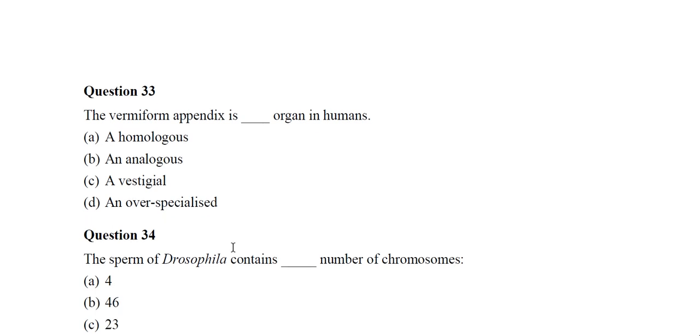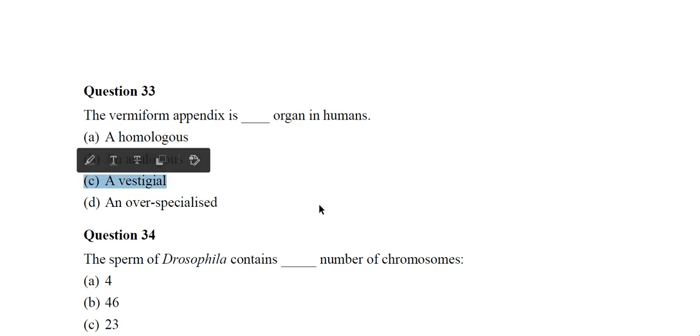Question 33: The vermiform appendix is a vestigial organ in humans. Option C is the correct answer.